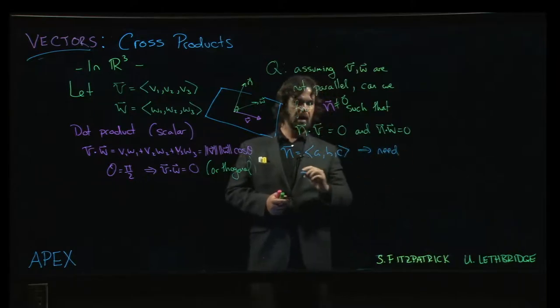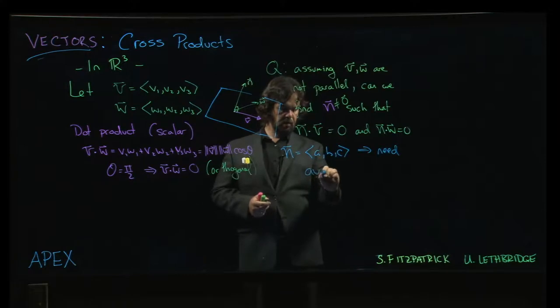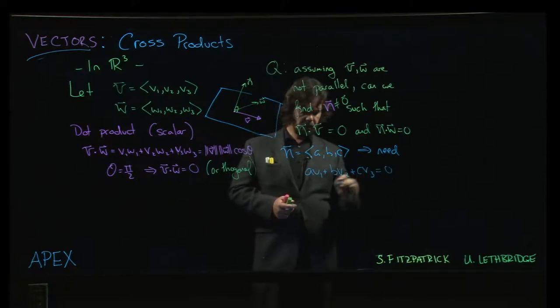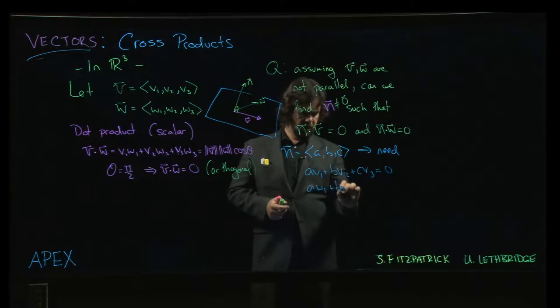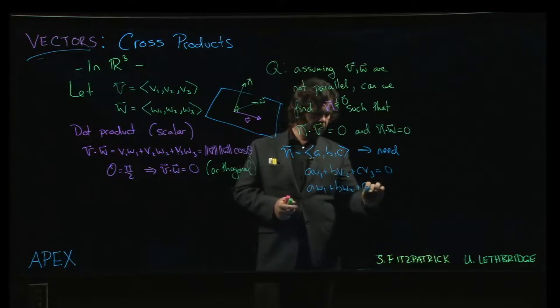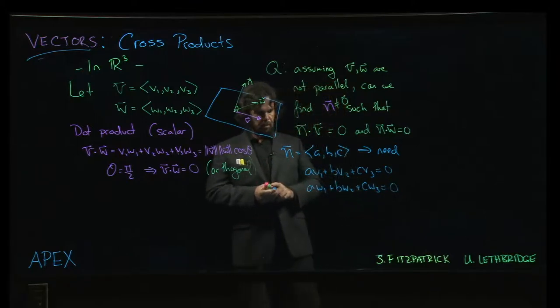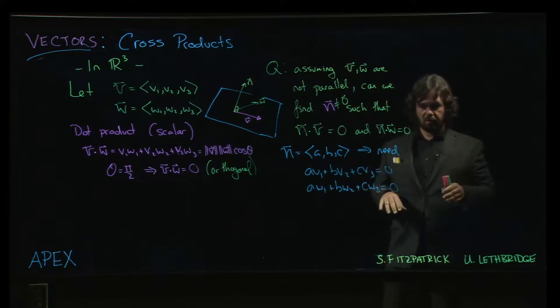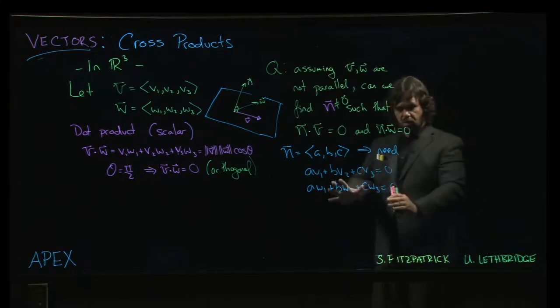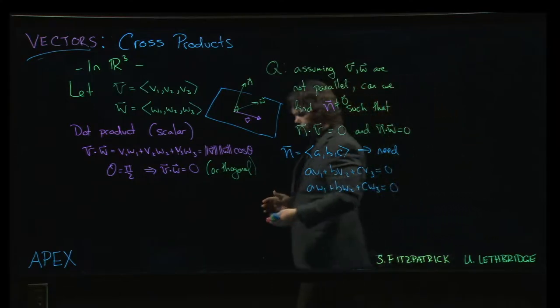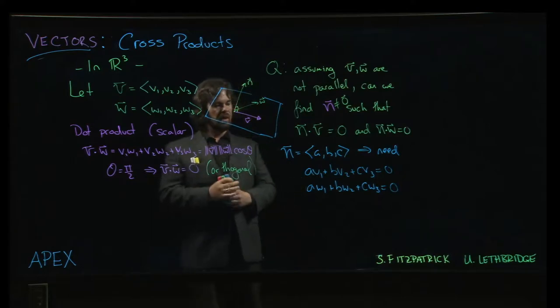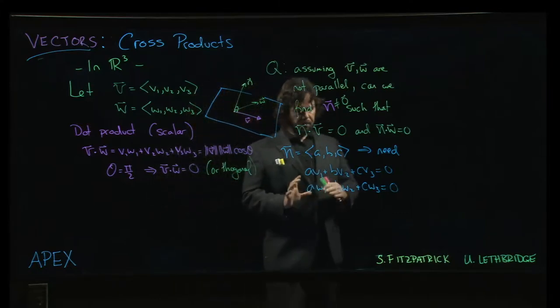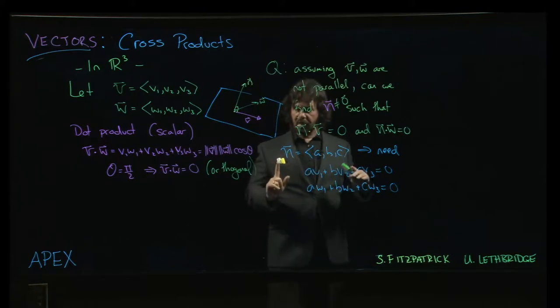Well, then you would need to have, you want these two dot products to be zero. So you need av1 plus bv2 plus cv3 to be zero, and aw1 plus bw2 plus cw3 equals zero. What you end up with here is a pair of linear equations. Those of you who are doing linear algebra at the same time or you've already done linear algebra, you know how to deal with this, or you're going to learn how to deal with it if you're earlier on in that course. There are techniques for solving a system of equations like this.